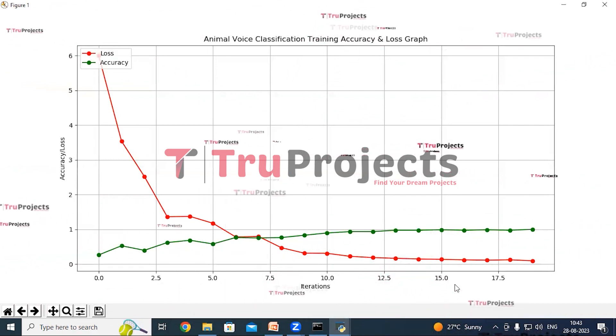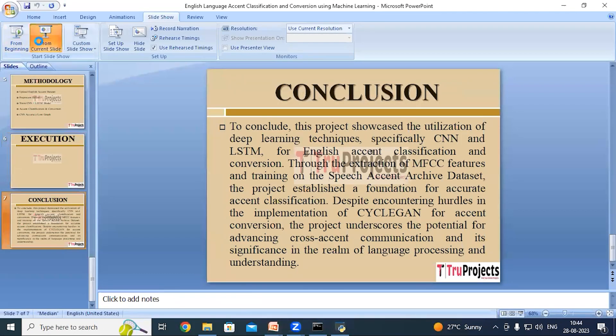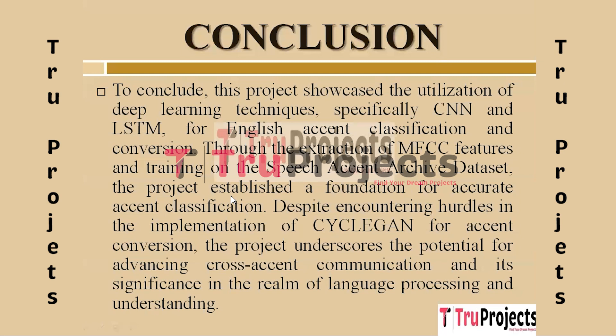In conclusion, utilizing CNN and LSTM, this project employed deep learning for English accent classification and conversion. Extracting MFCC features and training on the Speech Accent Archive dataset ensured accurate accent classification, highlighting cross-accent communication potential in language processing. The project also adapted a CycleGAN model; due to execution challenges, this alternative approach successfully converted English source accents to converted MP3 files, showcasing innovative problem solving.